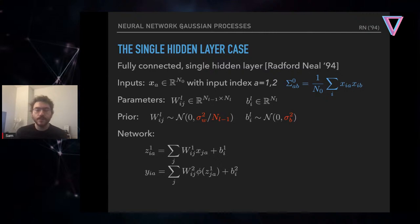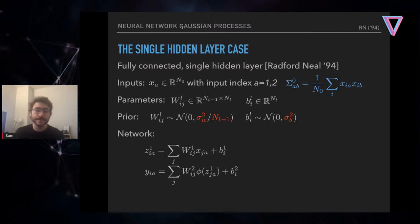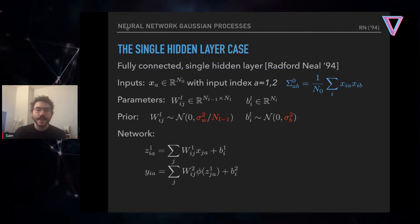Now I want to go through what the prior over functions actually looks like for an infinitely wide network, appealing to an old paper from the 90s by Radford Neal — an absolutely beautiful paper I highly recommend. We consider two inputs, x_a and x_b, and define the uncentered second moment matrix Σ₀ — like a covariance matrix but without subtracting the mean — summing over features i.